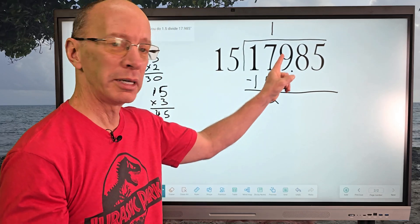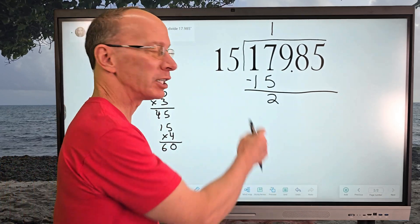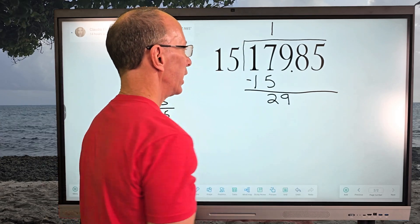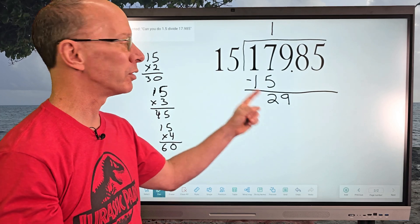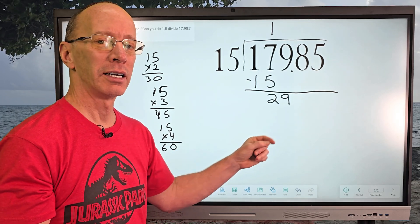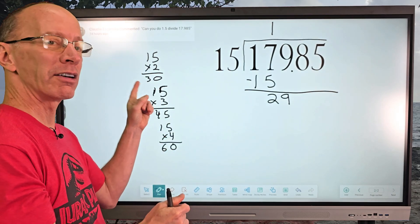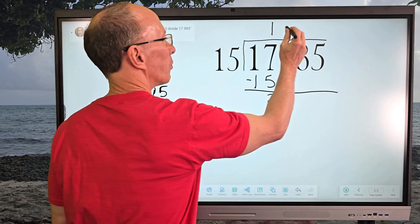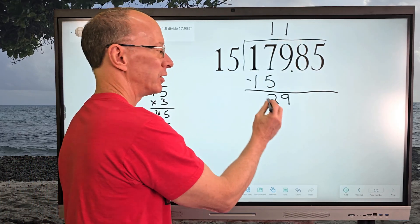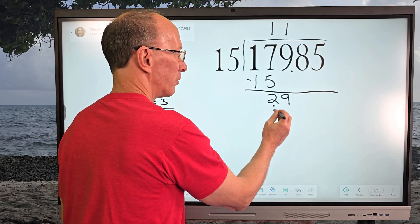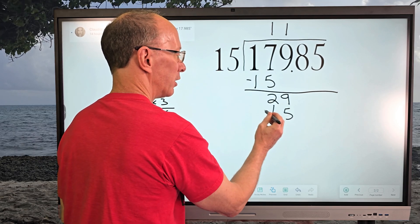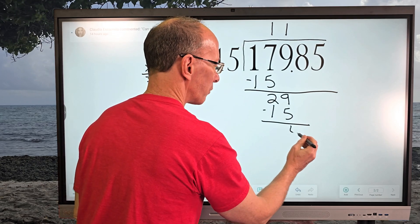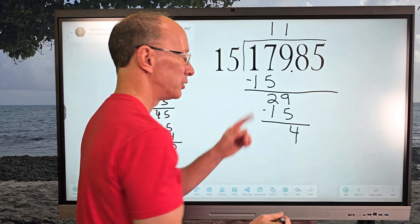Now, how many times does 15 go into 29? It's not 2, because that would be 30, so we stay with just 1. We put 1 right here, and 1 times 15 equals 15. Then we subtract: 9 minus 5 equals 4, and 2 minus 1 equals 1.